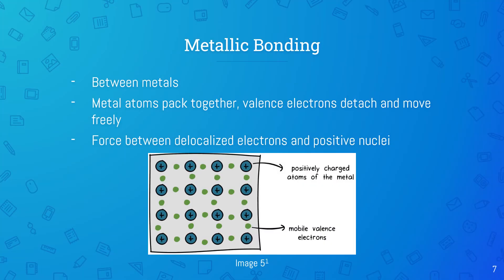Metallic bonding occurs between metals. In this type of bonding, metal atoms pack closely together and their electrons become detached and delocalized, and can move freely. A strong force occurs between the delocalized electrons and the positive metal nuclei. It's important to note that the metal atoms do not become cations, since although the electron detaches, it's still in the structure, as shown here.